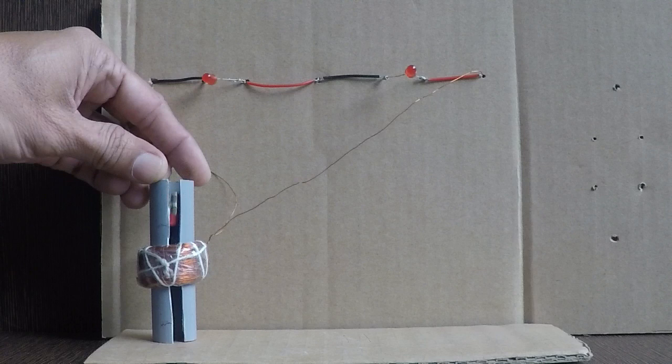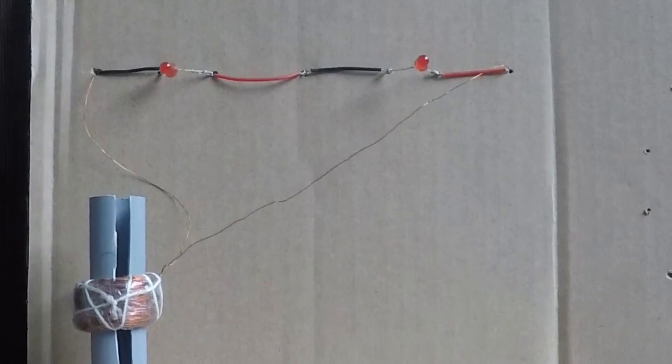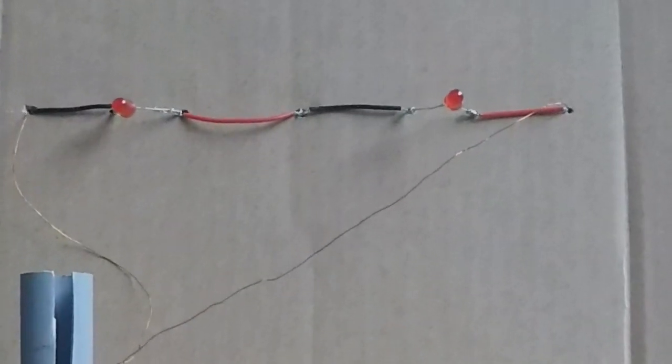What will happen if we connect two LEDs in series like this? Will they still glow if I pass the magnet like this? Give it a try.